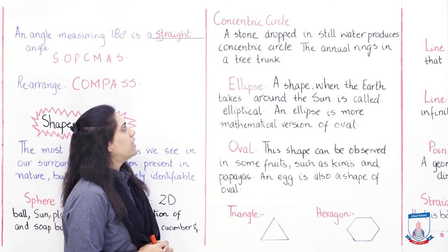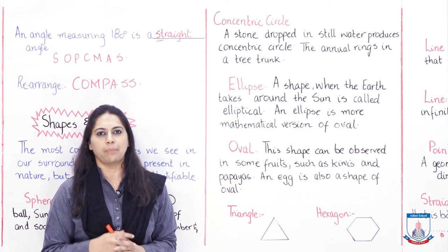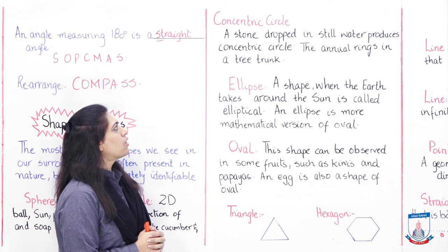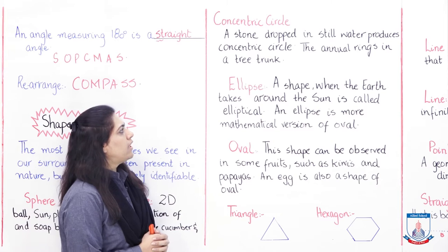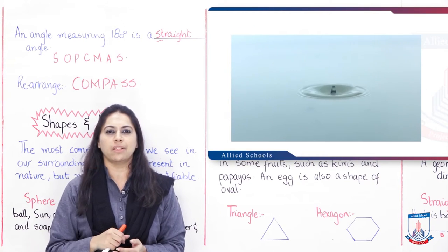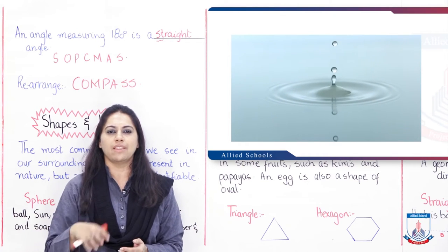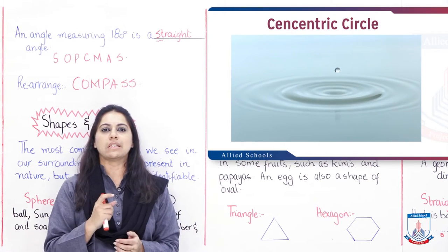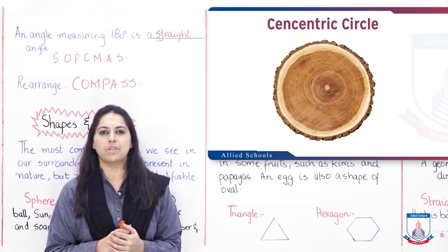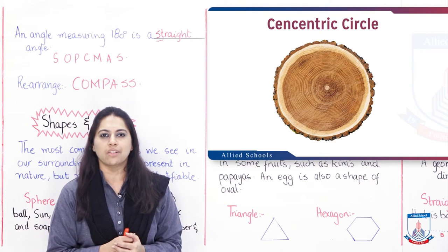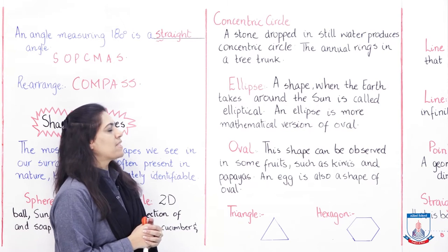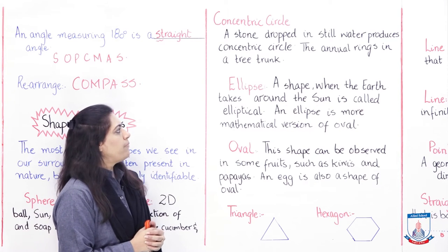Next shape is concentric circles. A stone dropped in still water produces concentric circles. Concentric circles are the circular ripples formed when you drop anything into water. You can also see these circles on a tree trunk. Diagrams are also given in your book so you can check what concentric circles look like.